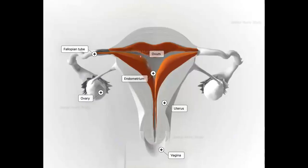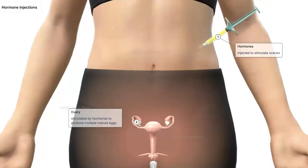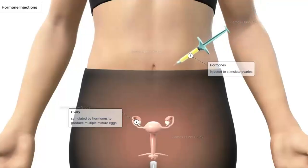The IVF medications start on day 2 or day 3 of the woman's period. Hormones are injected to stimulate the ovaries to produce multiple mature eggs.